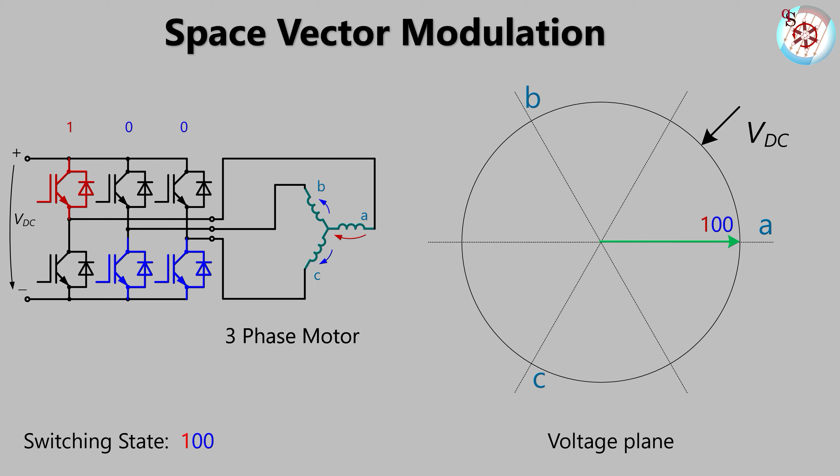Next state. The middle leg changes its switching state, 110. We have seen in the previous state how to determine the corresponding voltage vector.